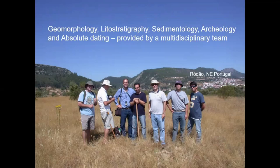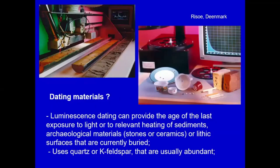One method is C14, if there is available some organic material of that age, but we have problems with modern trees, etc. Another method that is very interesting is luminescence dating, which I will focus on. Luminescence dating can use several types of materials — from stones, from ceramics, and from sedimentary grains like quartz or feldspar.